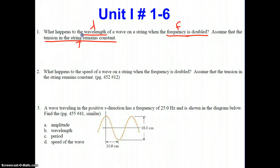Looking ahead to number 2, they ask what happens to the speed of the wave on a string when the frequency is doubled, assuming the tension remains constant. So we see two similar questions, but number 1 asks for the impact on the wavelength, number 2 asks for the impact on the speed. But in both cases, the frequency is doubled, and the tension in the string remains constant.